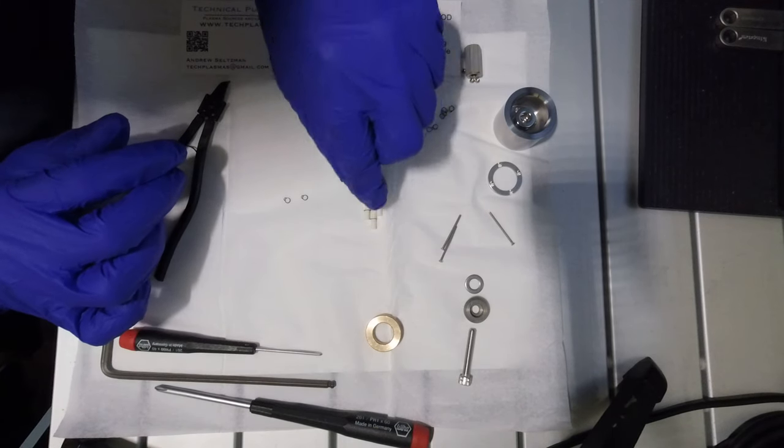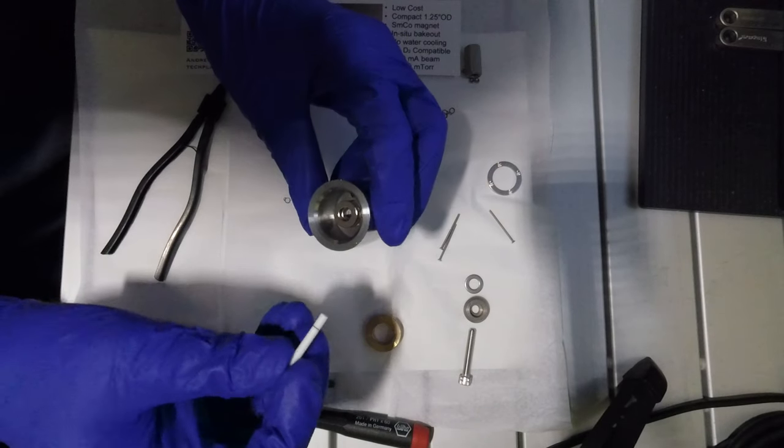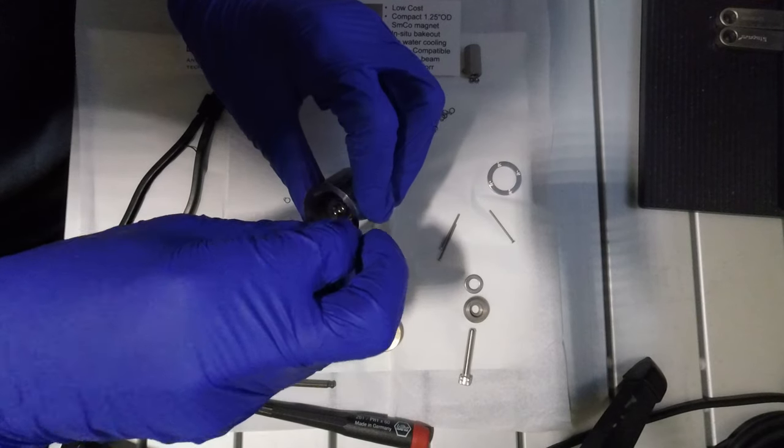Three ceramic insulator rods have their circlips attached. Each of these is inserted in three of the holes in the base of the ion source.